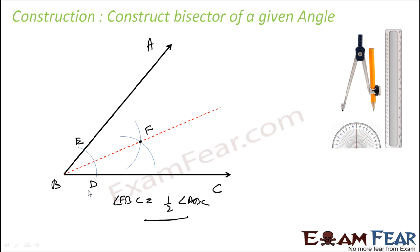So what we did is: with B as the centre and some radius, we drew an arc which intersects rays BC and BA at points E and D. Once that is done, with D and E as centres and radius equal to a little more than DE/2, we drew two arcs which intersected at point F. Then we joined BF, and that is the bisector.